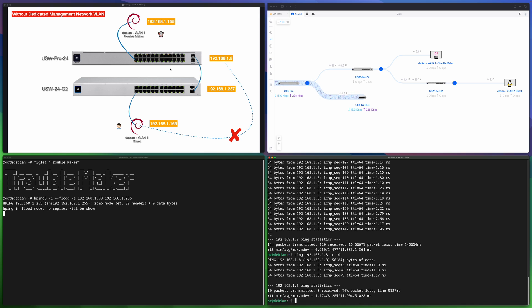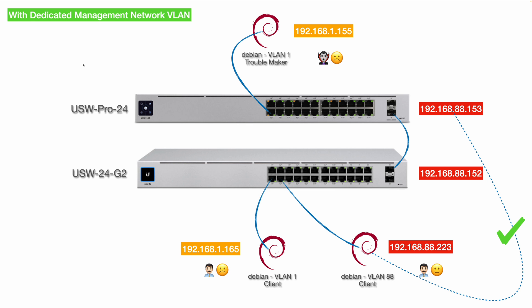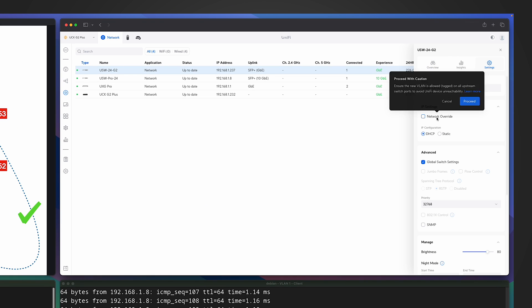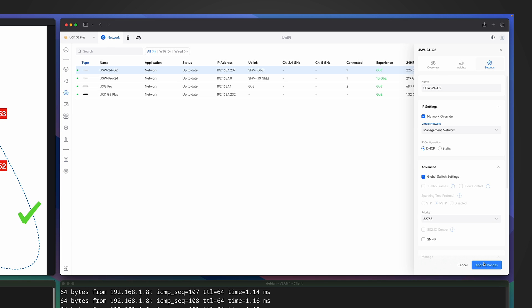Let's see how we can resolve the issue. We don't want the UniFi switches to be in the same VLAN as the client devices. Since the troublemaker is in VLAN 1, let me put the two UniFi switches into a separate VLAN — for example, VLAN 88. Then I'll use a new client which is also in VLAN 88 to see whether it can still access the UniFi switches when the troublemaker is making trouble. In the UniFi Network Controller, let me manage the two switches by changing them to VLAN 88.